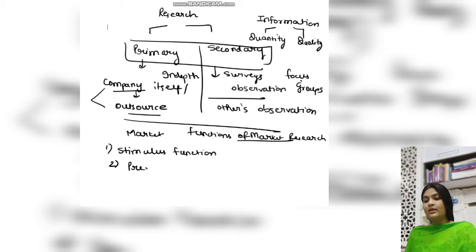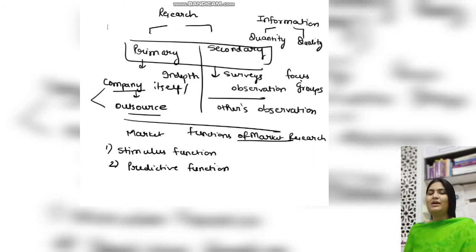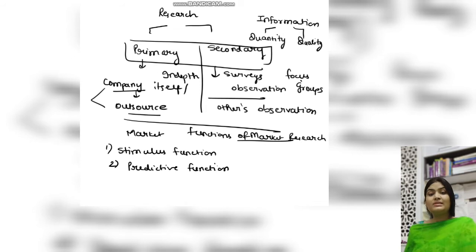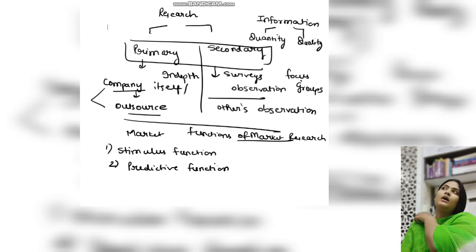Then we have the predictive function — we predict what the future can be. For example, before COVID, if we could not predict the epidemic, we could have saved so many lives. But now we understand that anything can happen anytime, and post-COVID, companies are ready to provide work from home to employees so that work will not suffer. Predictive function means when you do market research to find out market trends — will customers follow online or offline modes of transaction in future, what do they prefer? All these things come under predictive function.